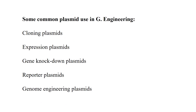Some common plasmids used in genetic engineering include: cloning plasmids to increase the number of genes and for construction of gene libraries; expression plasmids for the production of proteins; gene knockdown plasmids, such as the CRISPR-Cas9 system, used to delete a specific gene from an organism; reporter plasmids for identification or screening of a specific phenomenon within the cell; and genome engineering plasmids used for engineering of genes.